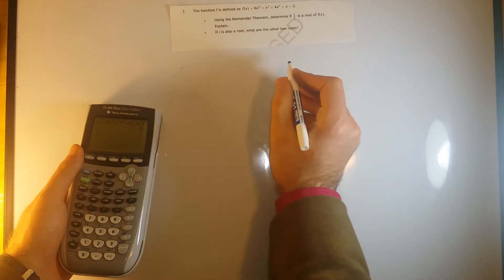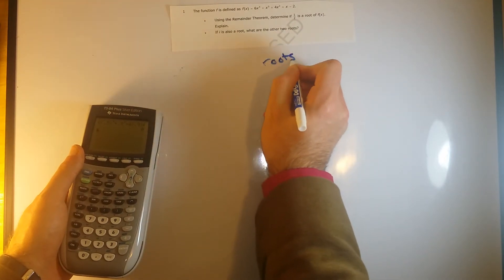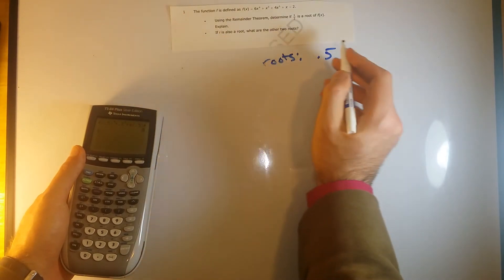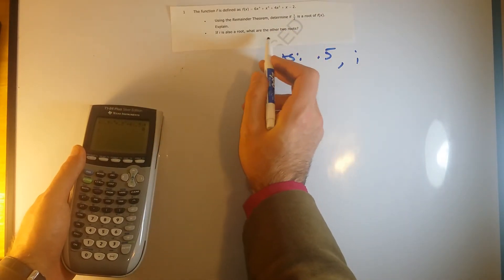So right now we know, roots are, we've got 0.5, and they're saying if i is also a root, so let's add that. If i is also a root, what are the other two roots?